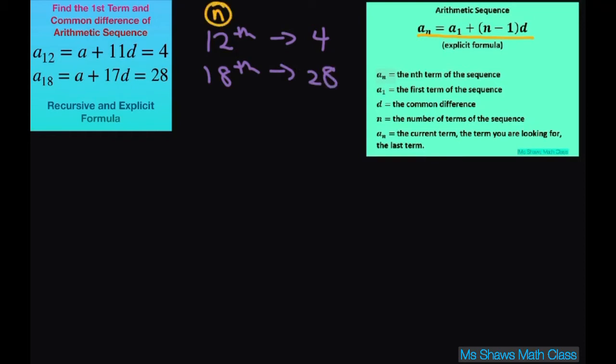So if I do my nth term of the sequence, a sub 12 equals, and I copy my formula your first term. Basically in your first term we let a1 equal a so we don't have to keep writing 1. So a plus n minus 1 times d. And we're looking for the a and the d. But my n is 12, so 12 minus 1 is 11.